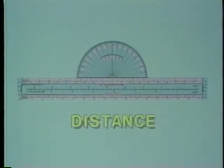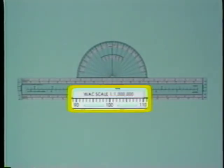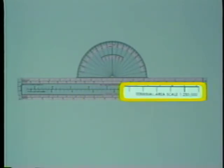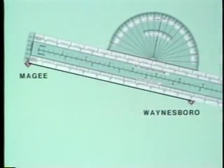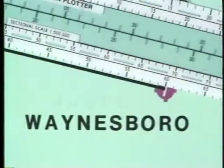Another function of the plotter is to measure distances. Most VFR plotters have mileage scales that match WAC charts as well as sectional charts. This plotter also has a scale for terminal area charts — always use the scale appropriate to the chart you're using. Both nautical and statute mile distances can be determined with the plotter. To measure the distance from McGee to Waynesboro, place the zero end of the plotter over the departure airport and align the straight edge with the course line. Using the nautical mile scale, the distance to the destination airport is 60 nautical miles.